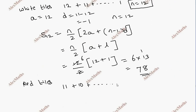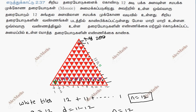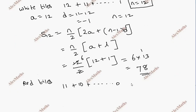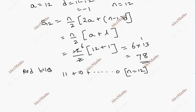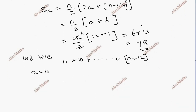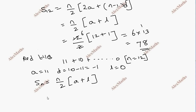The last term for red tiles is 0. So a = 11, d = 10 minus 11 = minus 1, and last term l = 0. Now Sn = n by 2 into a plus l. So S12 = 12 by 2 into 11 plus 0, which gives 6 into 11 = 66. Number of red tiles is 66.